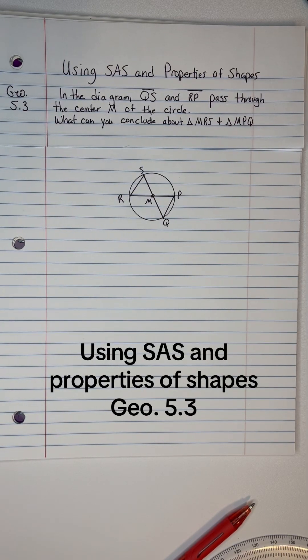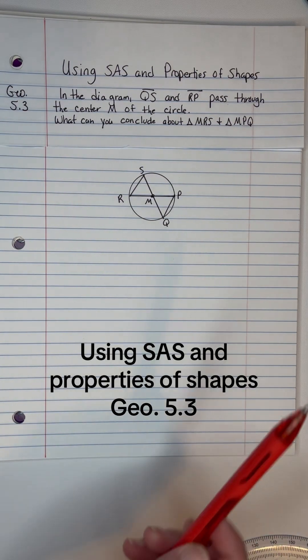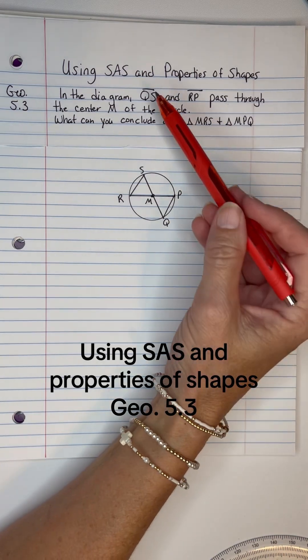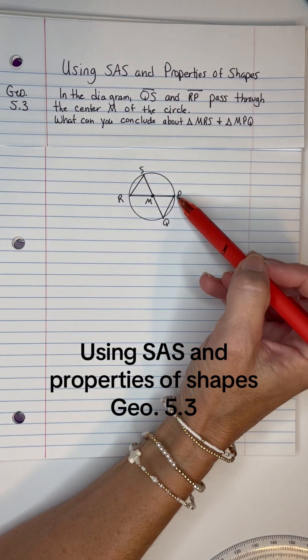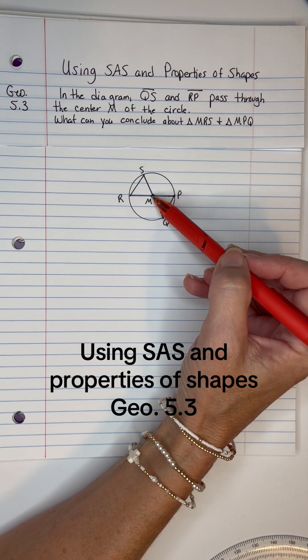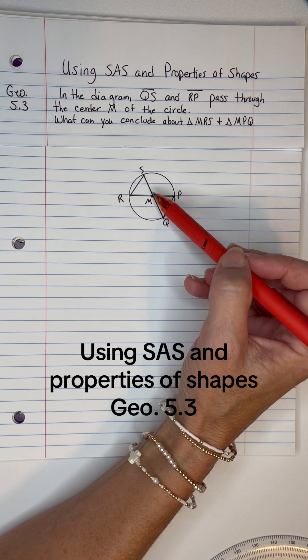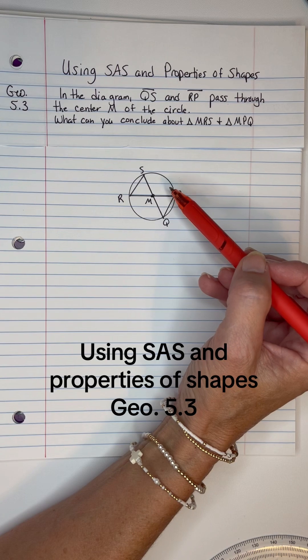We're going to use side angle side and properties of shapes. So in this diagram, segment QS, that's from here to here, and segment RP pass through the center M of the circle. Okay, so we're thinking about circles and the parts that are circles.